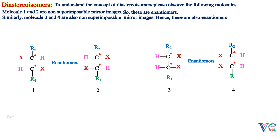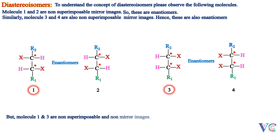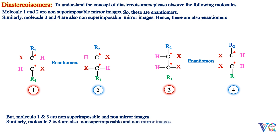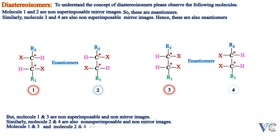But molecules 1 and 3 are non-superimposable and non-mirror images. Similarly, molecules 2 and 4 are also non-superimposable and non-mirror images. So molecules 1 and 3, and molecules 2 and 4, are diastereoisomers — that is, non-superimposable, non-mirror images.